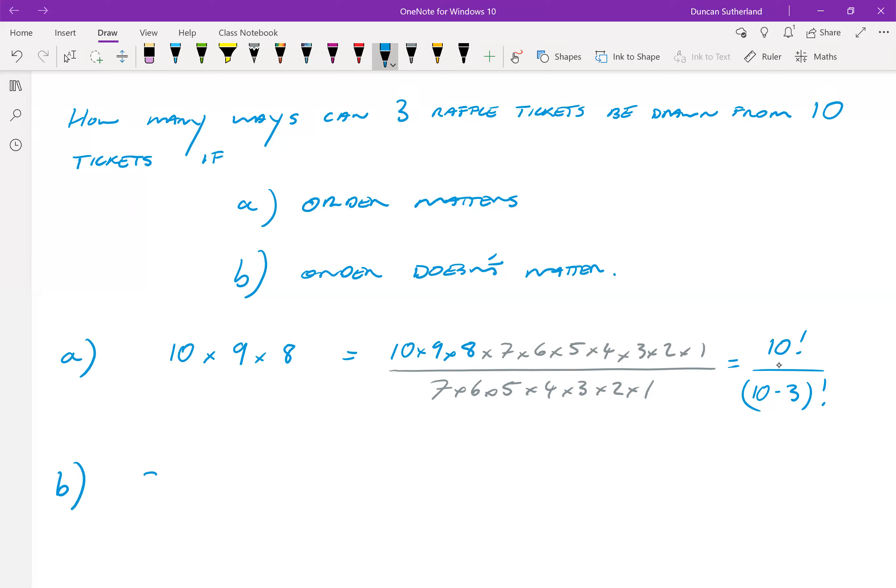So three factorial times the combination, we'll call this a combination, C(10,3), and that's equal to the number of permutations, which we've determined is equal to 10 factorial over 10 minus 3 factorial.